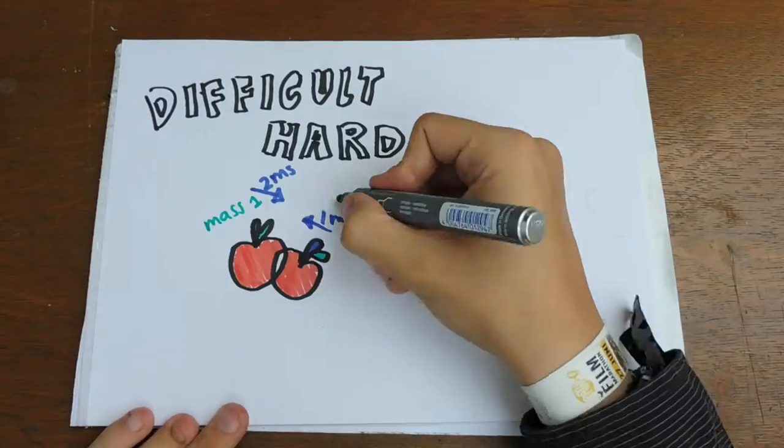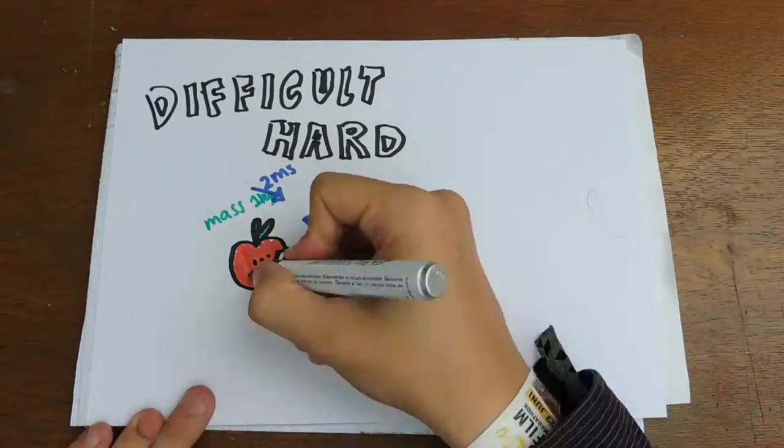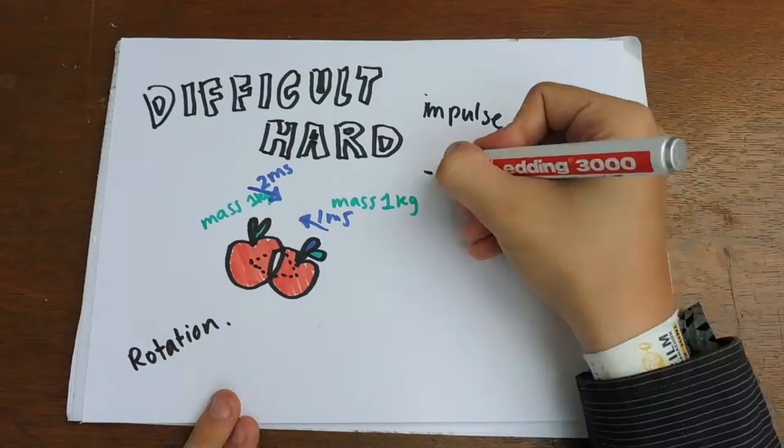We have two apples, both with their own velocity and mass. Then we have to find the intersection points. This is important for calculating the torque.